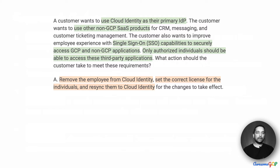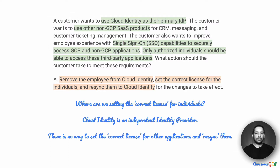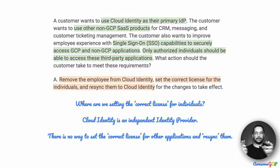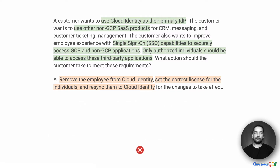Option A suggests: remove the employee from Cloud Identity, set the correct license for the individuals, and resync them to Cloud Identity for the changes to take effect. But where are we setting this correct license? If the employee is removed from Cloud Identity, they no longer have an email address at the company. They don't have an account on Cloud Identity or the service provider. The way identity providers work is not that you submit a license for the app to the identity provider, and there's no way to resync them either. So Option A is just not workable and we eliminate it.